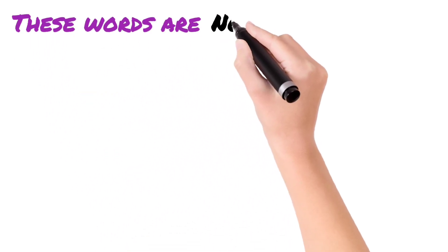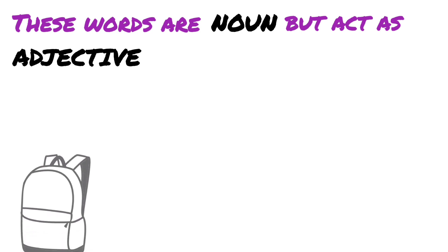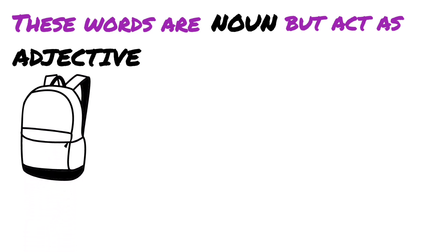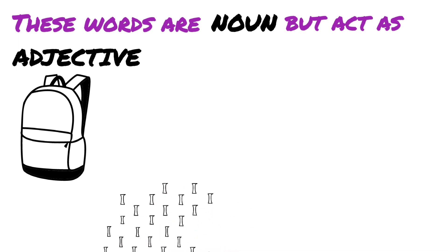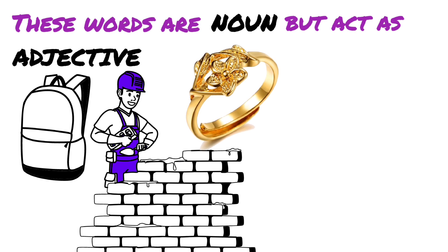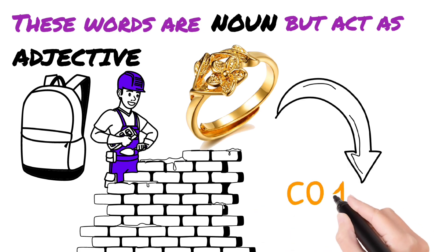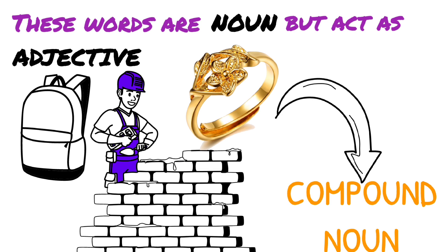In material adjectives, note that these words are all nouns but used as adjectives. For example: 'a leather bag' — leather is also a noun and bag is a noun, but here leather is a material used as an adjective. 'A brick wall' — brick is a noun, wall is a noun, but here brick is used as an adjective. 'A gold ring' — gold is the material, used as a noun, but it functions as an adjective. These are also known as compound nouns where one noun modifies another.